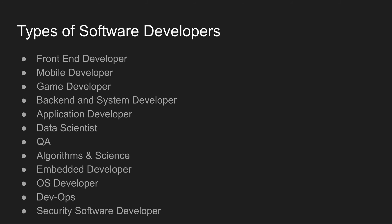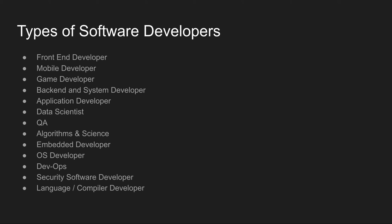The next role is language and compiler developers. Languages like Java and C++ are very good programming languages, and all of these are created by language and compiler developers. If you want to create a new language or improve an existing one, you can become a language and compiler developer.